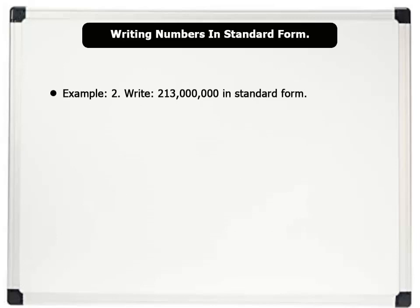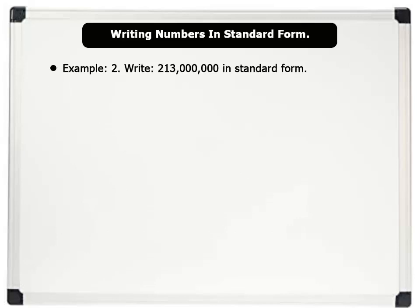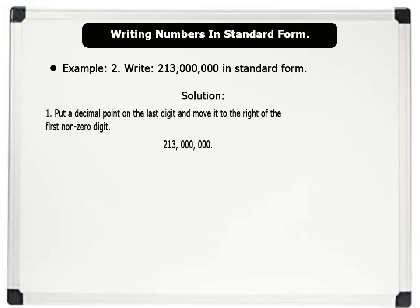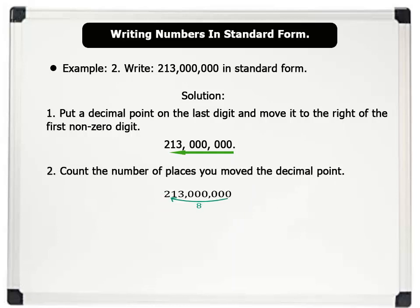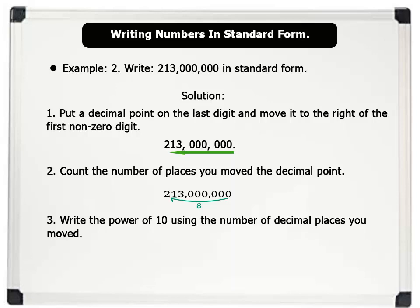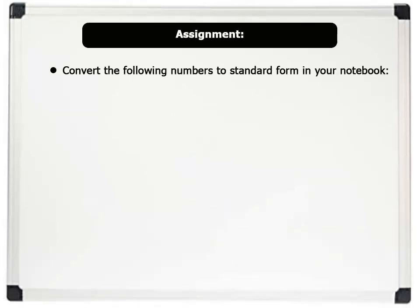Example 2: write 213 million in standard form. Solution — step 1: put a decimal point on the last digit and move it to the right of the first non-zero digit. Step 2: count the number of places you move the decimal point — the decimal point is moved 8 places to the left. Step 3: write the power of 10 using the number of decimal places moved. Therefore, 213 million equals 2.13 × 10 to the power of 8. Now pause this video and convert the following numbers to standard form in your notebook.